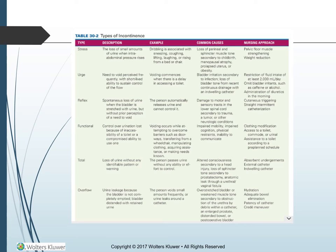Total incontinence is loss of urine without any identifiable pattern or warning — the person passes urine due to altered consciousness secondary to head injury, loss of sphincter tone secondary to prostatectomy, or anatomic leak through a urethral-vaginal fistula. Nursing approach: absorbent undergarments, external catheter, or indwelling catheter. Overflow incontinence is urine leakage because the bladder is not completely emptied; the bladder is distended with retained urine, and the person voids small amounts frequently or urine leaks around a catheter. Causes: overstretched bladder or weakened muscle tone due to catheter obstruction, enlarged prostate, distended bowel, or post-operative bladder spasms. Nursing approach: hydration, adequate bowel elimination, catheter patency, and Credé maneuver.